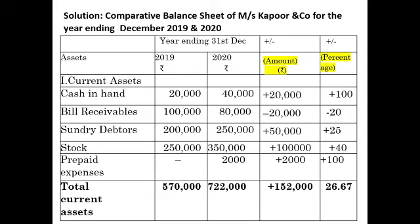The solution is divided into three steps. In the first two columns, we write the figures as they are for the year ending 2019 and 2020. Next we find the absolute change — increase or decrease in amount — and in the last column we find the percentage change. We cannot write the balance sheet as given; we need to rearrange the assets, writing current assets as the first heading.